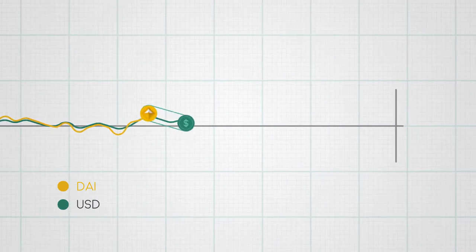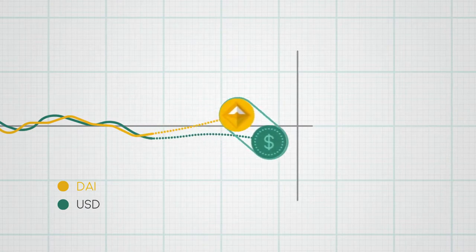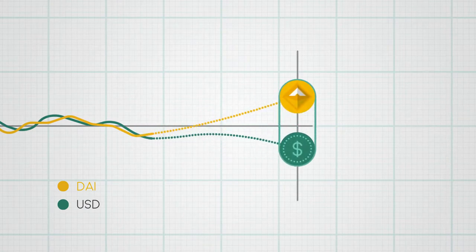The cost of borrowing DAI becomes more expensive when the price is below its target, whereas if the price rises above target, then the cost of creating new DAI reduces.